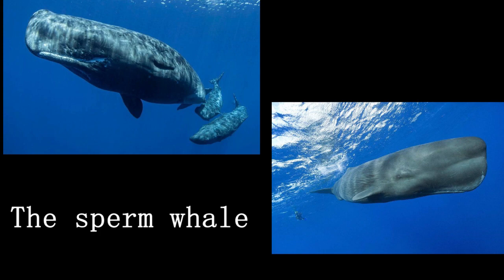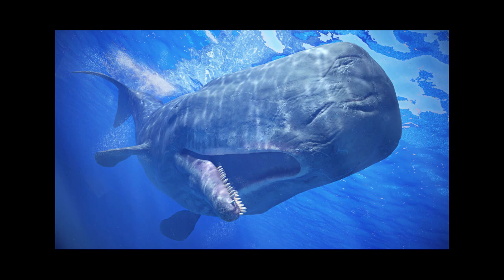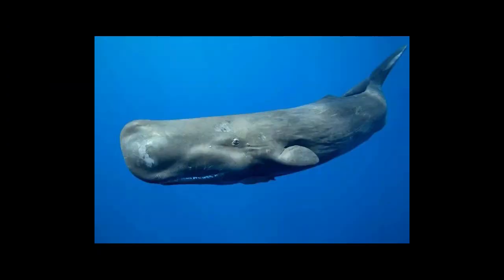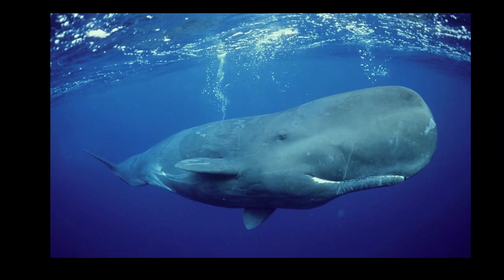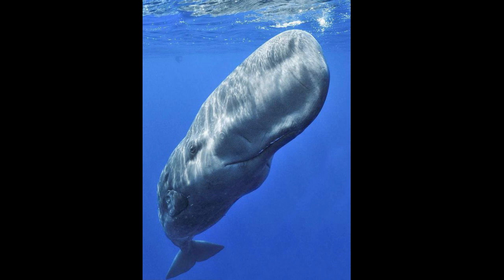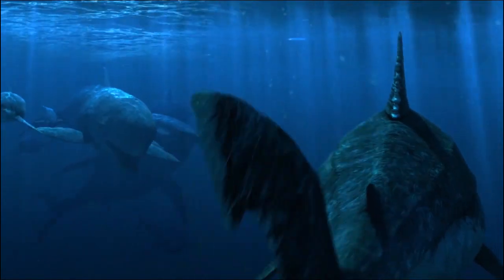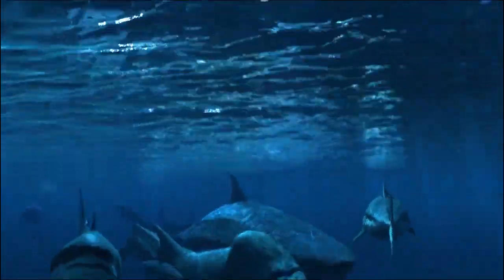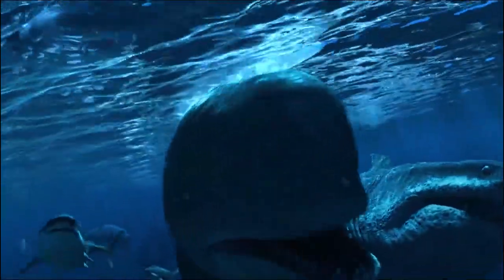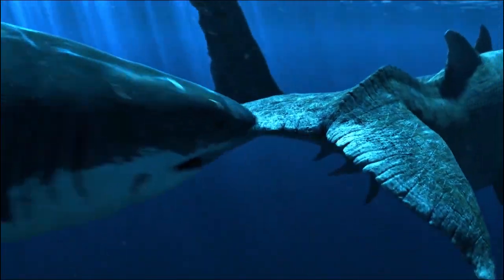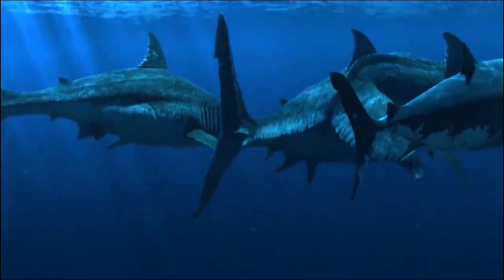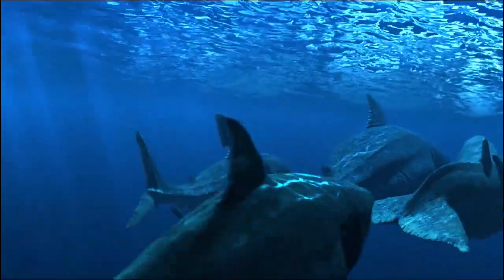The sperm whale is the largest living carnivorous animal globally and the deepest diving mammal. It can reach a length of 18 meters and weigh over 50,000 kilograms, and possesses the largest brain among animals, weighing approximately 7.8 kilograms. Sperm whales enjoy swallowing giant squid whole but cannot digest the beak, so they secrete a substance that encases the beak's residue, gradually forming a sticky dark-colored substance in the small intestine known as ambergris.